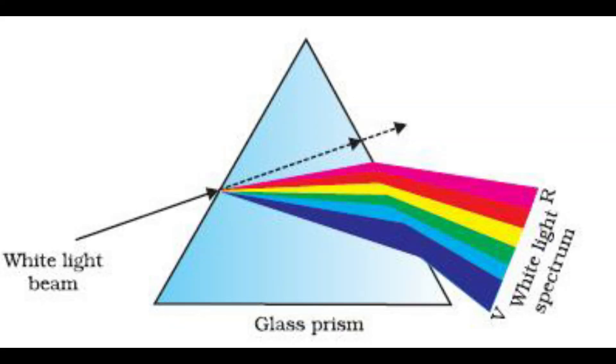One important point to remember is that colors seem to change radically according to the circumstances under which they are viewed. Take the example of red: if placed near blue, the red appears yellower; near yellow, it appears bluer. Sunlight is refracted into seven colors in the color spectrum: violet, indigo, blue, green, yellow, orange, and red. Each color has its own qualities and effects.